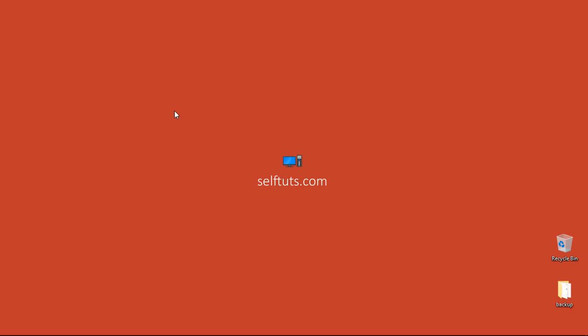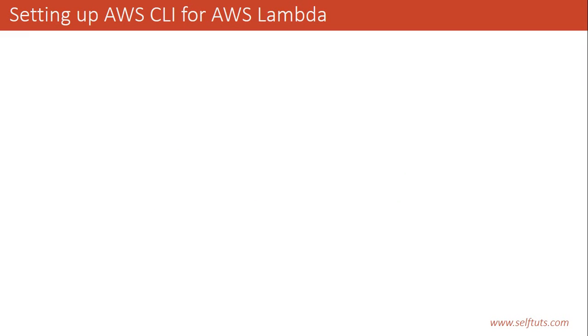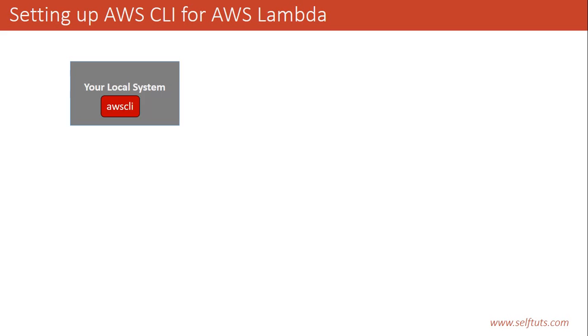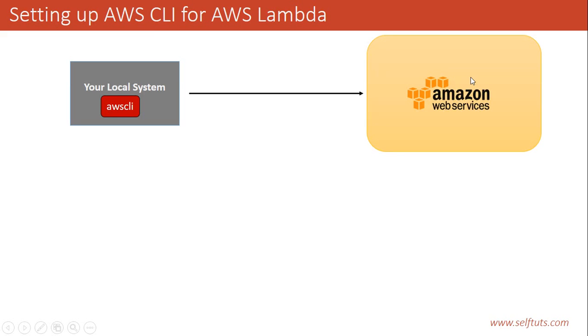Hello people, this is Serv Tutts and we are continuing our series on AWS Lambda. In this video we'll see how to set up AWS CLI, which is Amazon's command line tool to interact with Amazon Web Services. Basically, AWS CLI is a command line tool that will be installed on your local system and helps you interact with Amazon Web Services.